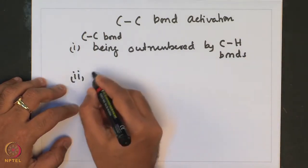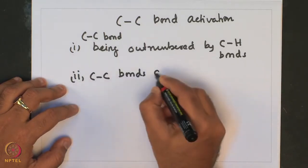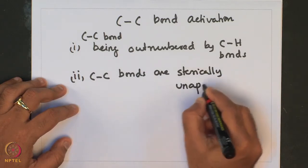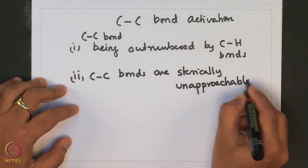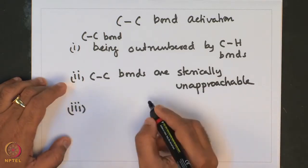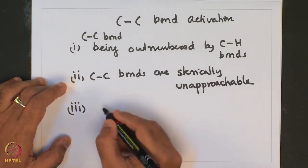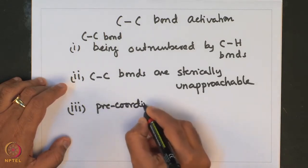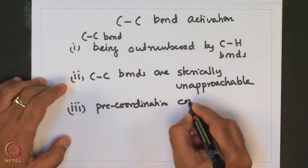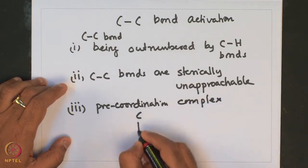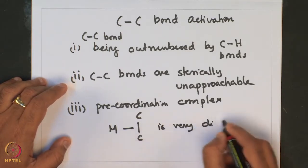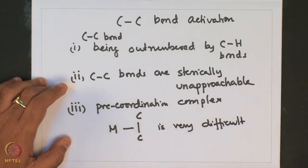Secondly, C-C bonds are sterically unapproachable. And lastly, the formation of a precoordination complex of this type is very difficult as this C-C bond is sterically unapproachable.